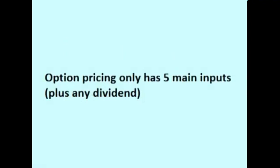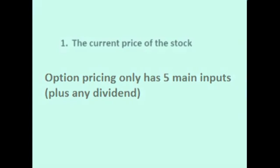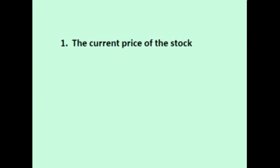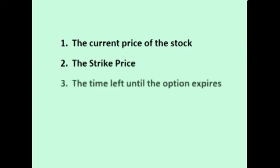There are only five inputs to the price of an option, or six if the stock pays a dividend. The first input is the current price of the stock. The second input is the strike price — the preset buy or sell price that you are locking in. The third input is the amount of time left until the option expires. It should make sense that if there is more time until expiration, there is more time for the price of the stock to possibly move to where the option is profitable.